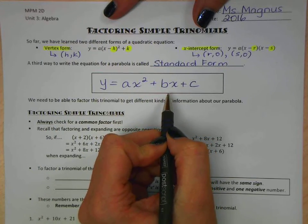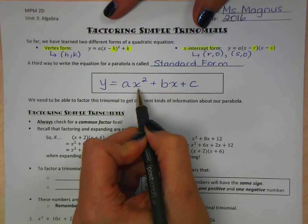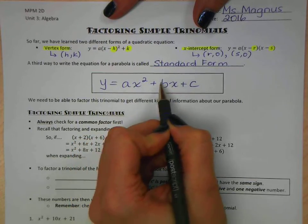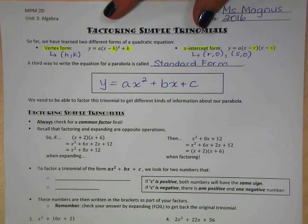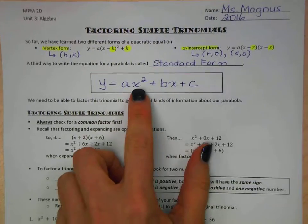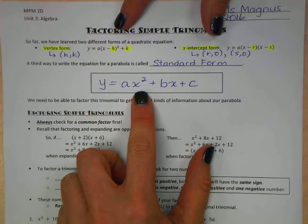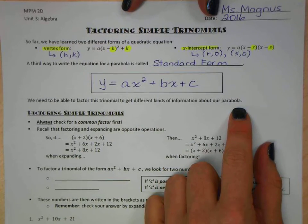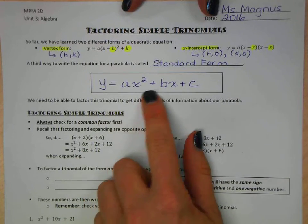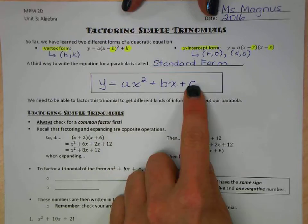But the big thing is, if you'll notice, this is a trinomial. So we have three terms in our expression, and that is what makes it a trinomial and why we care about this for our algebra unit. Now, we need to be able to factor this trinomial in order to get different kinds of information about our parabola. And that's why we're doing this, factoring a trinomial.